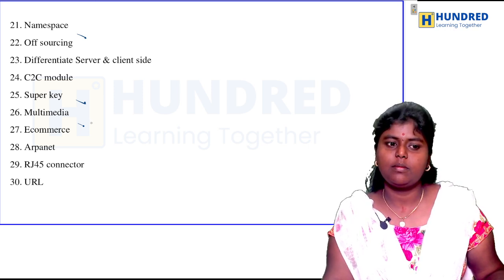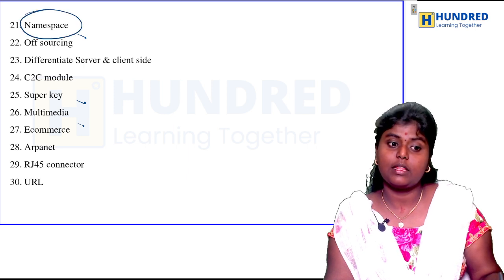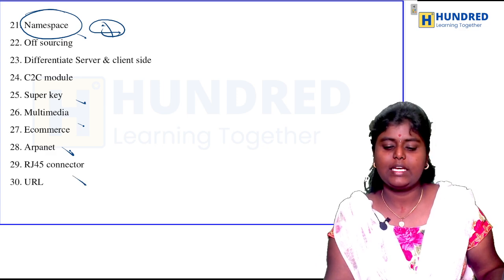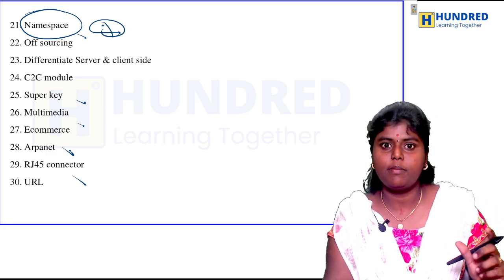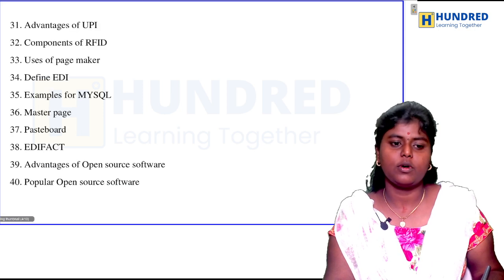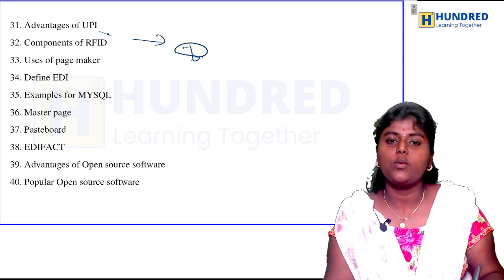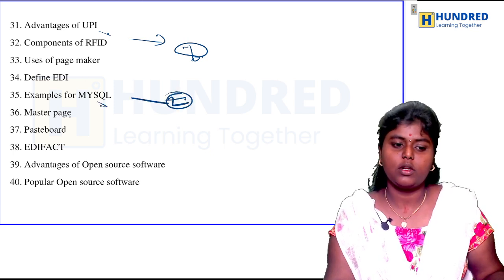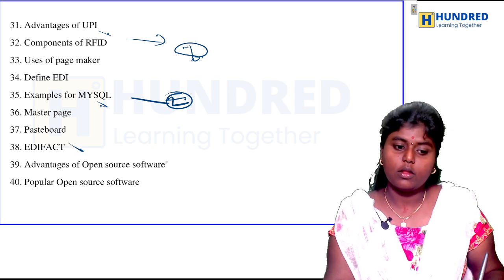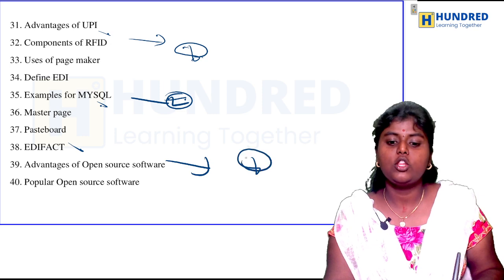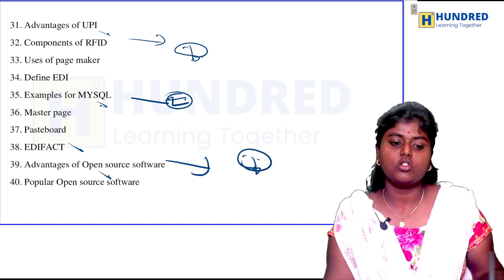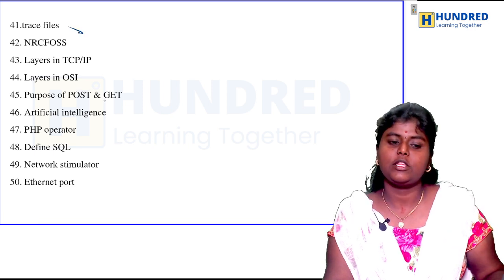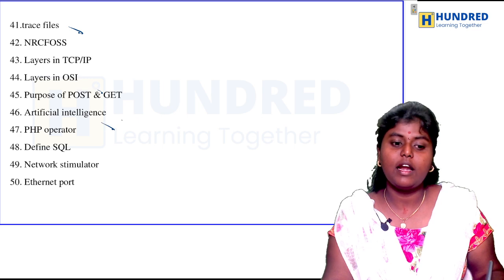These questions can be asked for 3 marks or 5 marks. Important questions include: What is the URL? What is the definition and full form of URL? What are the advantages of UDP? Examples of MySQL are an important question. What are the advantages of open source software? What are popular open softwares? Track files, OSI model — that is a little bit important. Also, questions on artificial intelligence.